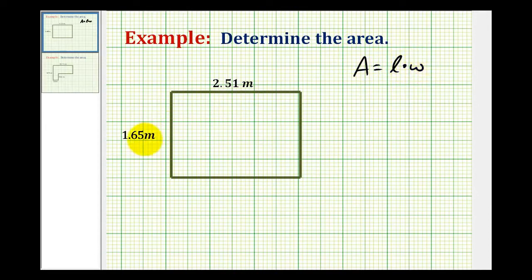So we need to determine the product of 1.65 meters and 2.51 meters. It doesn't matter in which order we multiply these because multiplication is commutative. Let's go ahead and write this as 2.51 times 1.65.